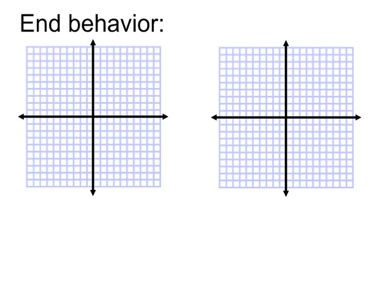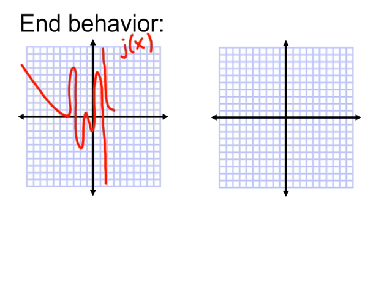So let me go ahead and tell you about end behavior. Let's say that I have some function called j of x, and the idea of end behavior, as the name would imply, is that we don't really care about what goes on in the middle. j of x can be doing all sorts of crazy stuff here in the middle, but we really care about what happens at the ends. So let's say that at the left end, as I go to the left, the function does this.